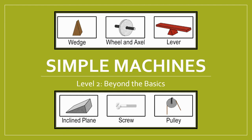In the first lesson on simple machines we explored what the different types of simple machines are, we saw some examples of where they're found in our everyday lives, and we got a sneak peek at the mechanical principles that allow them to manipulate force, distance, and speed.